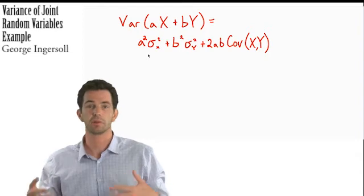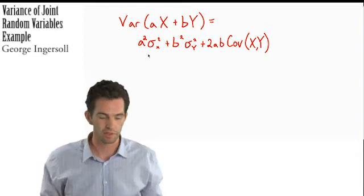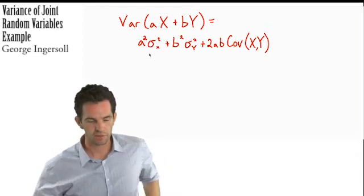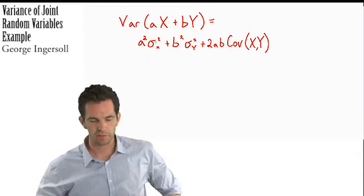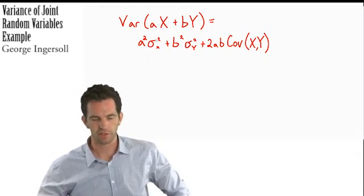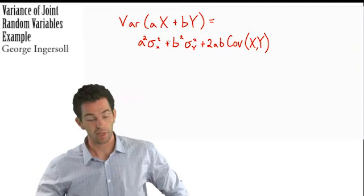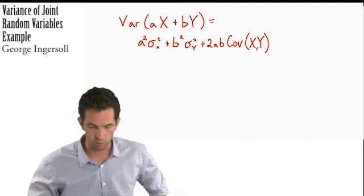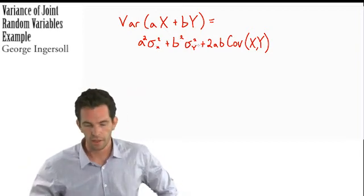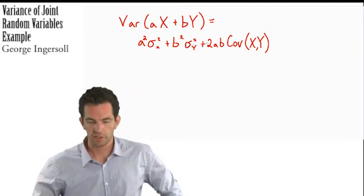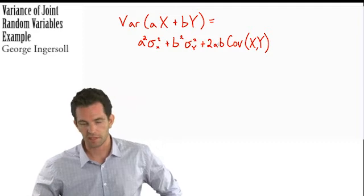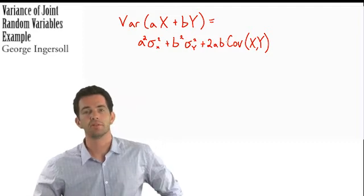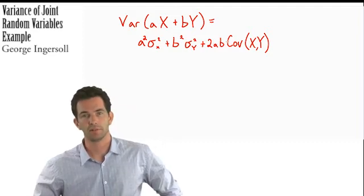Standard deviation is the square root of variance, so it's interchangeable. This symbol means the variance of x, plus b squared times the variance of y, plus 2 times a times b times the covariance of x and y.